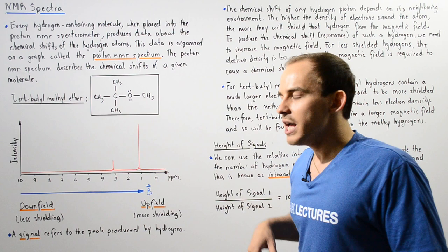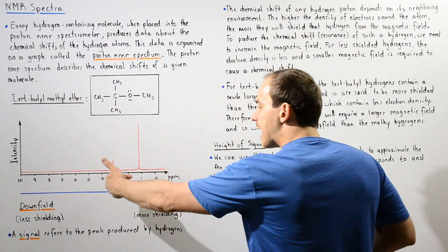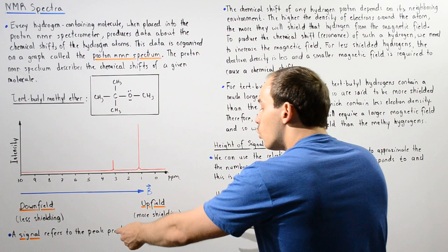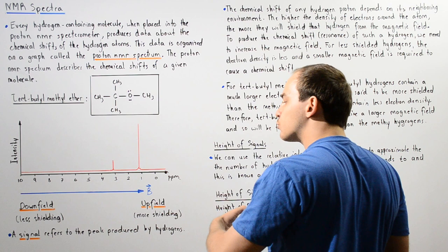As we go from the left side to the right side, the chemical shift value decreases. The right section of our spectrum is known as the upfield section. That's because we have more shielding taking place, and a greater magnetic field is required to induce the chemical shift of the hydrogen atom.